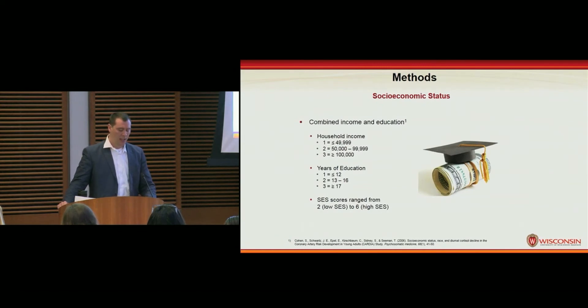We defined SES as a combined income and education score. Both household income and years of education were broken into three levels and summed together to create an SES score which ranged from 2, which would be low SES, to 6, which would be high.